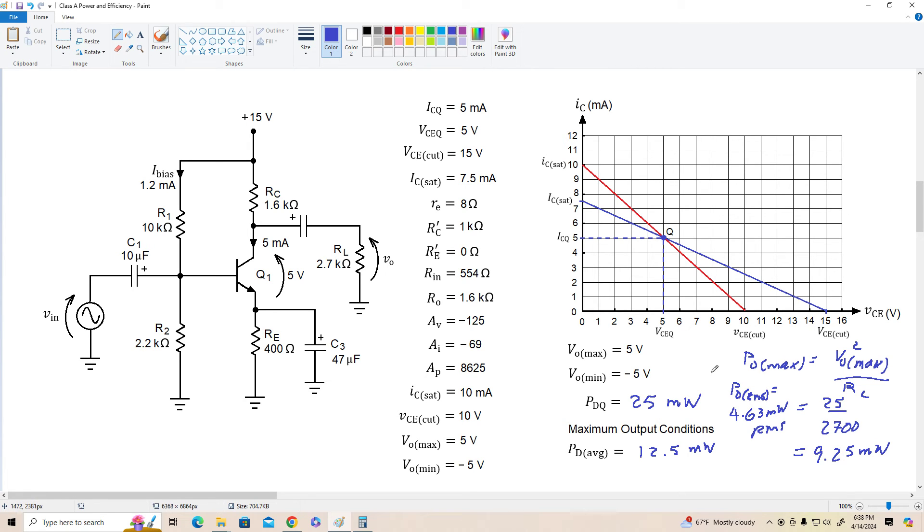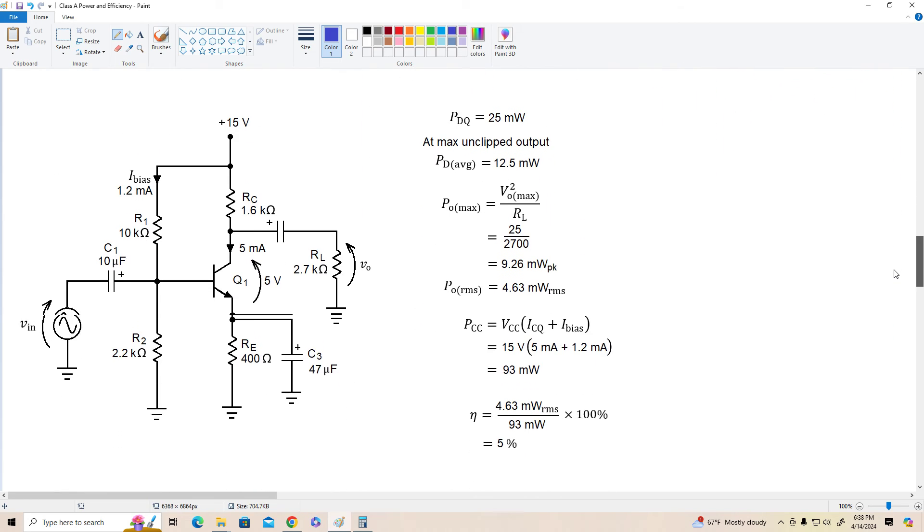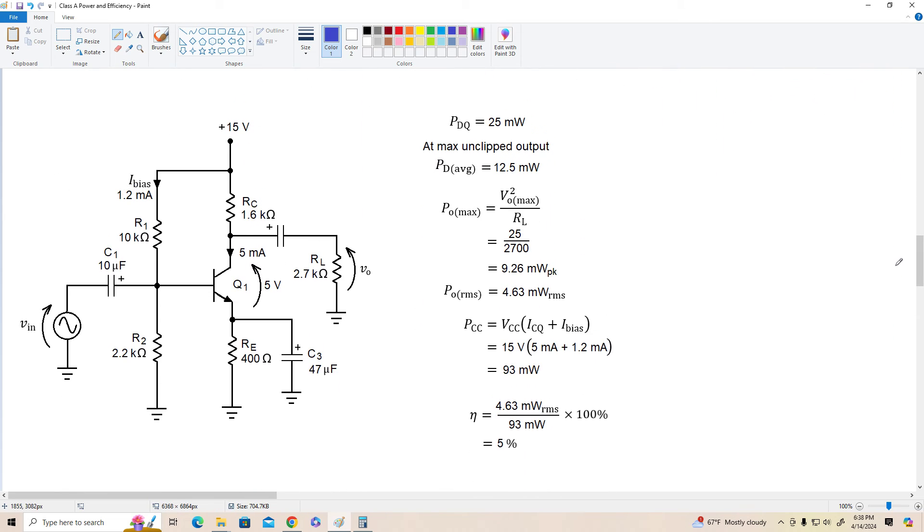Our RMS value is one half of that so P out RMS, let's divide that by two and we've got about 4.63 milliwatts RMS. A little bit crowded here but those are our RMS power to this load. This is not a power amplifier, it's a small signal amplifier so we're not going to get that much out of it. But let's go down here on the next page and calculate our efficiency.